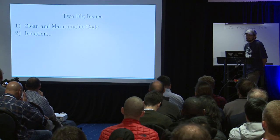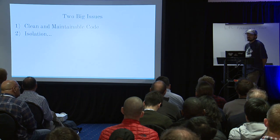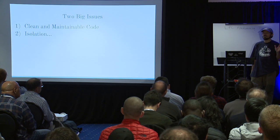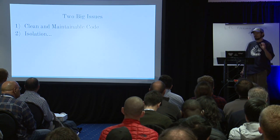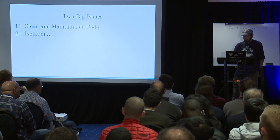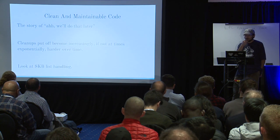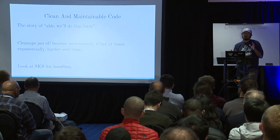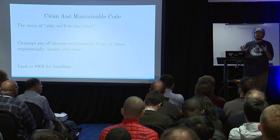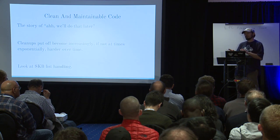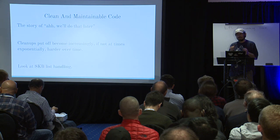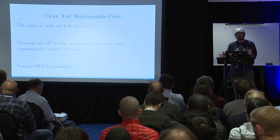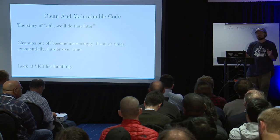We're going to talk about two important issues: clean and maintainable code, and the issue of isolation and network namespaces, which kind of piqued my interest. I want to get into a topic which is one of these instances where we push something down the road over and over again — it's like a snowball getting bigger and bigger, harder to stop the more we let it roll. And this is SKB list handling.